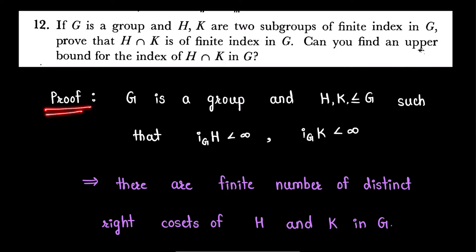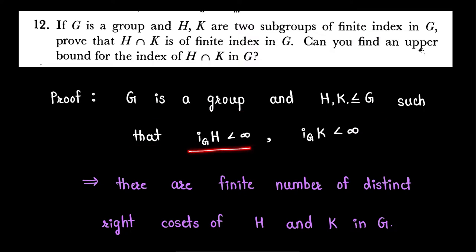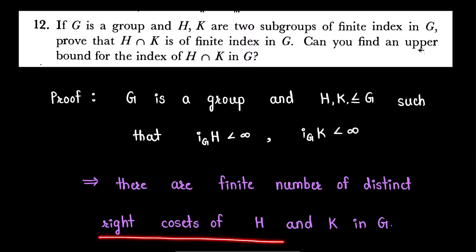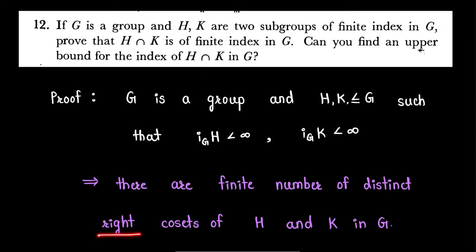Proof: Here G is a group and H and K are two subgroups of G such that the index of H in G is finite and the index of K in G is finite. Then from the definition, this implies there are a finite number of distinct right cosets of H and K in G. We can consider left cosets also.